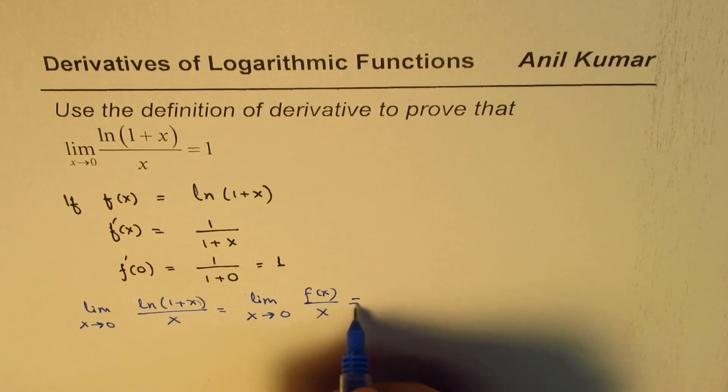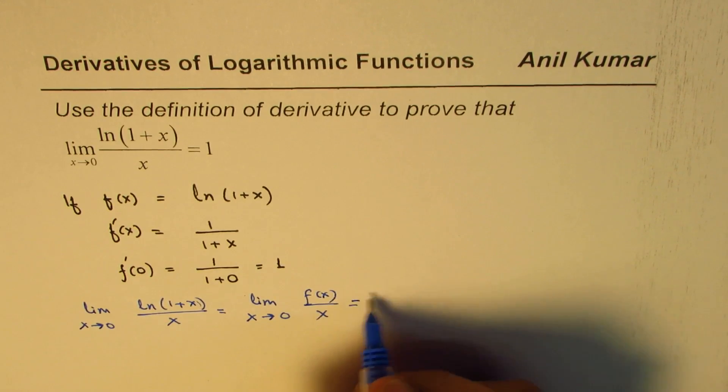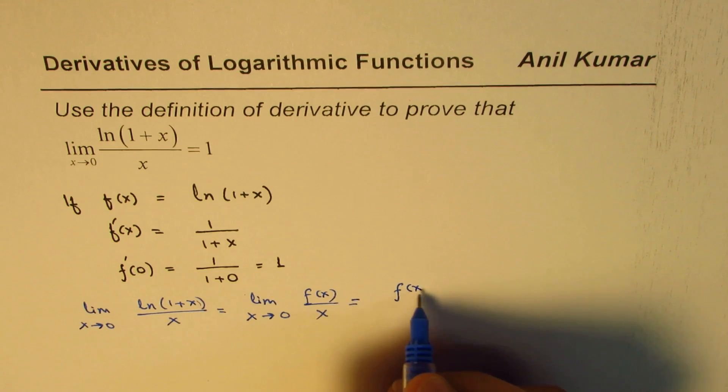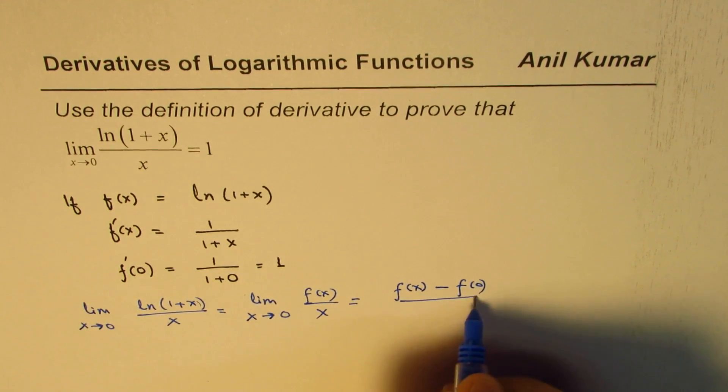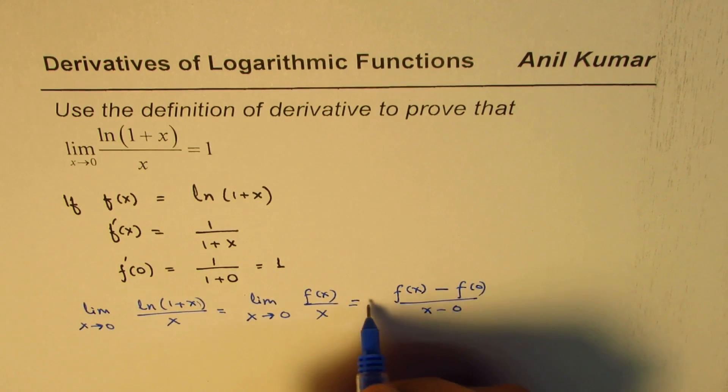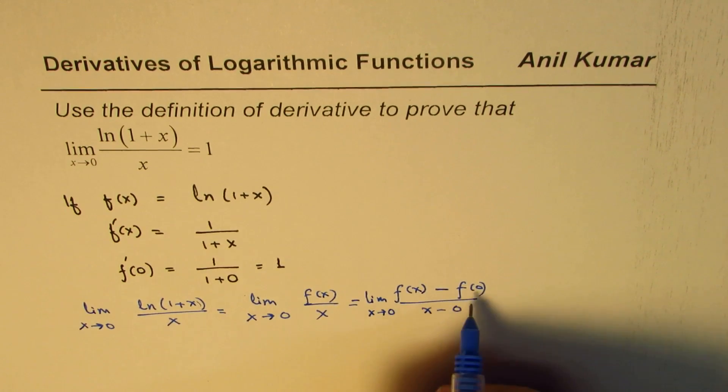Now this limit, by definition, will be f(x) minus f(0) over x minus 0 when we can say limit x approaches 0.